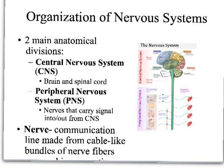There are two main anatomical divisions of a nervous system. There's the central nervous system, or the CNS, and that's the brain and spinal cord — that's where all the integration happens. And then there's the peripheral nervous system, or the PNS, and it is made of nerves that carry signals to and from the central nervous system — basically the messengers. A nerve is the communication line made between body parts, made from cable-like bundles of nerve fibers surrounded by connective tissue.